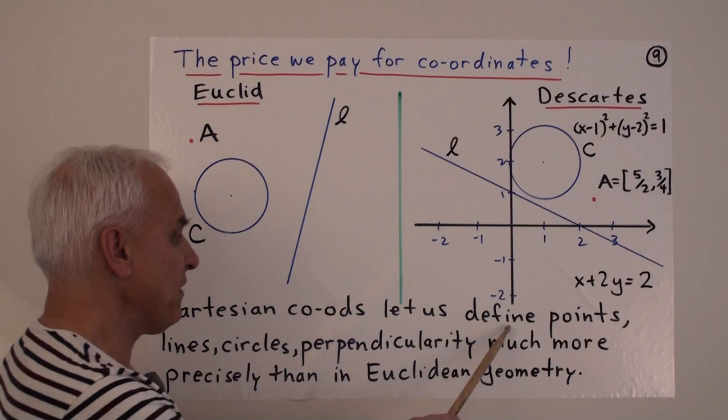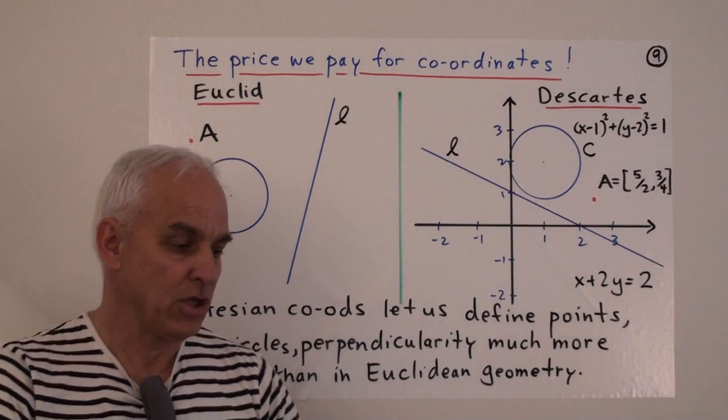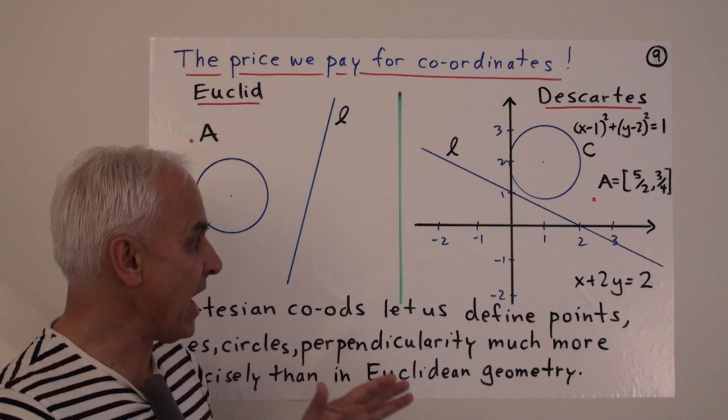So a very powerful method to pin down what we're talking about. And, very importantly, to define what it is that we're talking about. So Cartesian coordinates let us define points, lines, circles, perpendicularity, and many other things much more precisely than in Euclidean geometry. So a huge advance, a huge development, with many positive aspects, really laying the foundation for 20th century linear algebra.